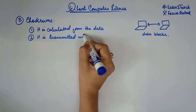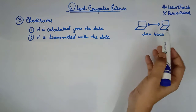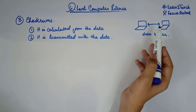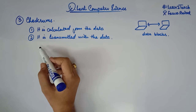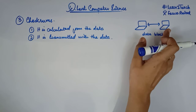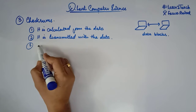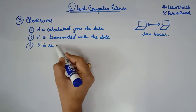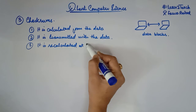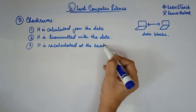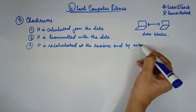The checksum needs to be transmitted with the data. When it is transmitted to the receiver, the receiver is going to calculate it again. The checksum is then recalculated from the block of data that has been received at the receiver's end.